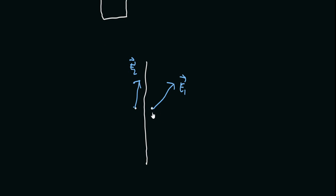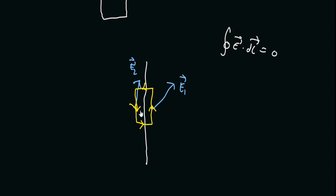Now let us enclose these two points in a closed loop passing through both of them. One thing to note is that the width of the loop crossing the surface will be vanishingly small. Therefore, we will not include the contribution of the electric field along those short segments — we will only care about the two long parallel sides of the loop.